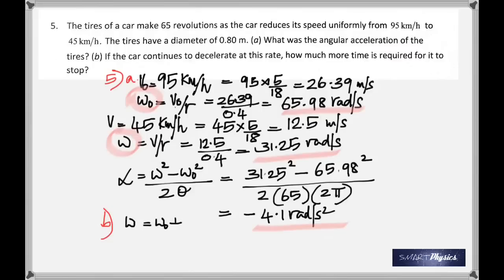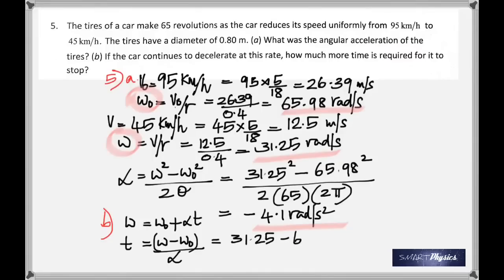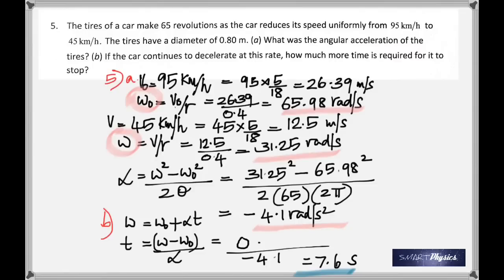For part b, how much more time will it take to stop? The final angular velocity is zero. It continues with the same alpha. So t = (0 − 31.25) / (−4.1), which gives 7.6 seconds.